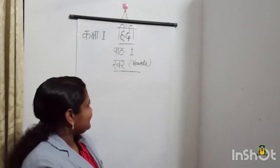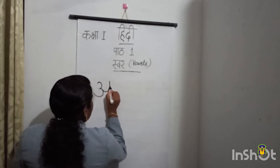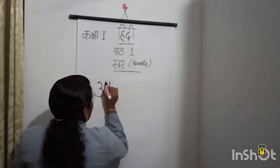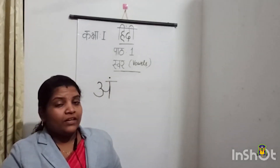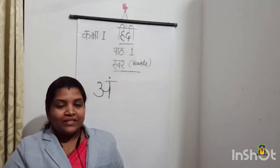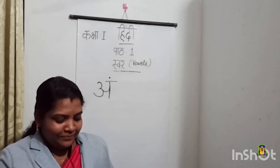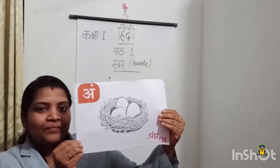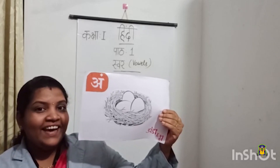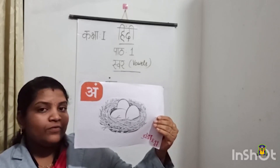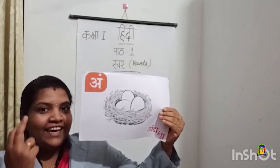So let me write the letter. This letter is AN. And next I am going to introduce a word starting with letter AN. What is this? This is ANDA. And which is the first letter of ANDA? AN. So AN say ANDA.